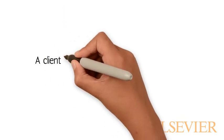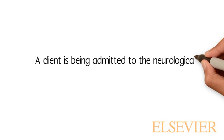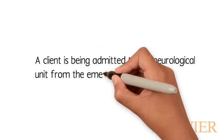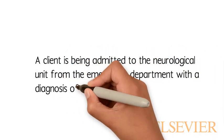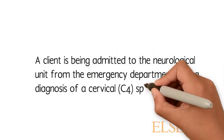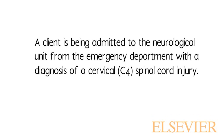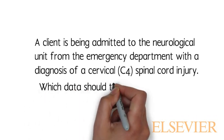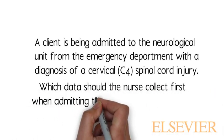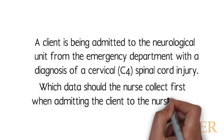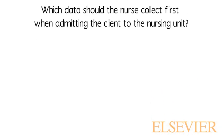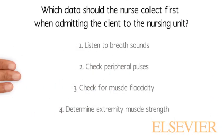A client is being admitted to the neurological unit from the emergency department with a diagnosis of a cervical C4 spinal cord injury. Which data should the nurse collect first when admitting the client to the nursing unit? One, listen to breath sounds. Two, check peripheral pulses. Three, check for muscle flaccidity. Or four, determine extremity muscle strength.